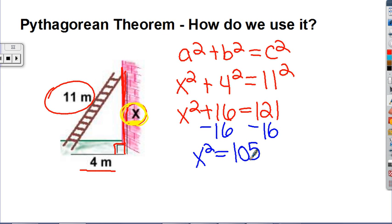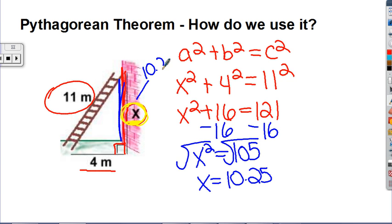Something times something is 105. Well, 105 isn't a perfect square, so I would use my calculator to take the square root of 105, which would be 10.25. This tells me that this missing side, or the height that the ladder is up the wall, is 10.25.